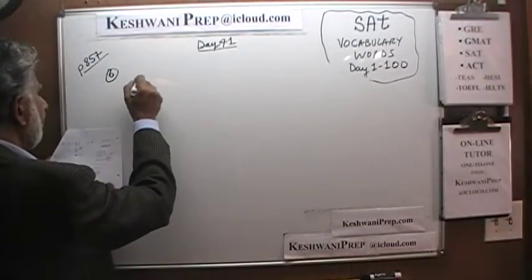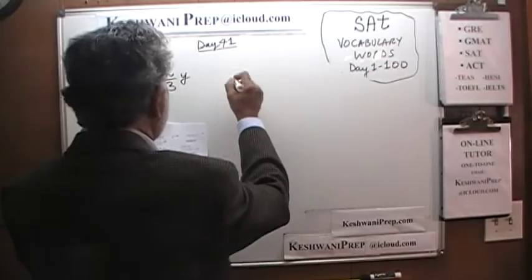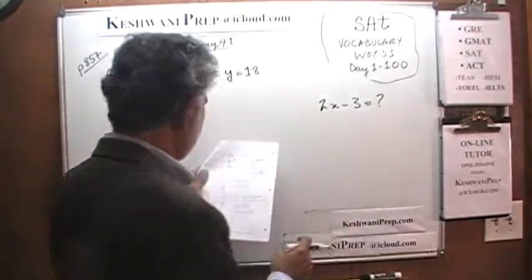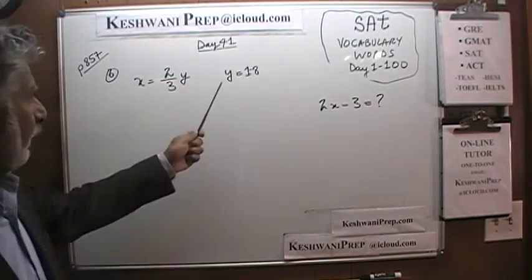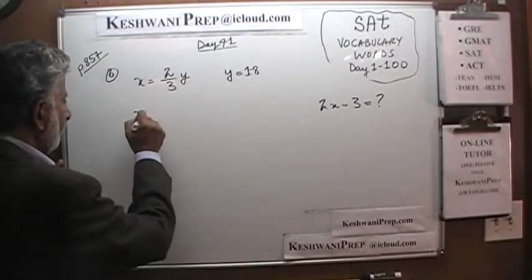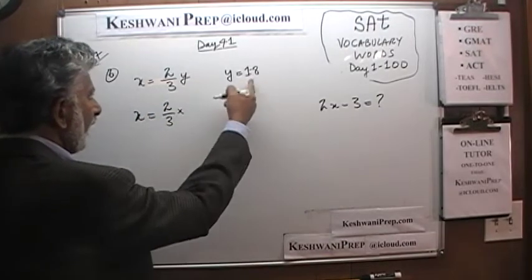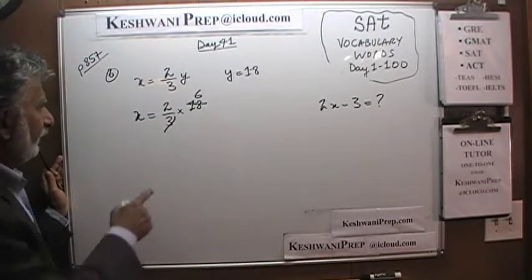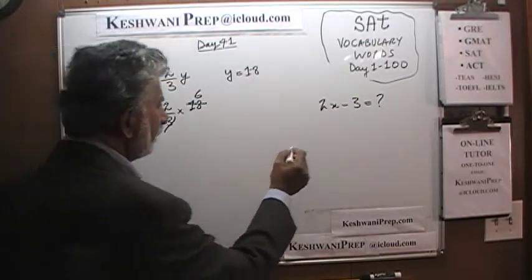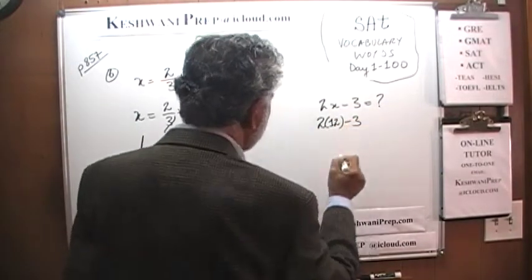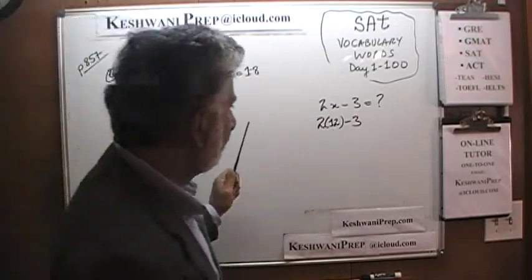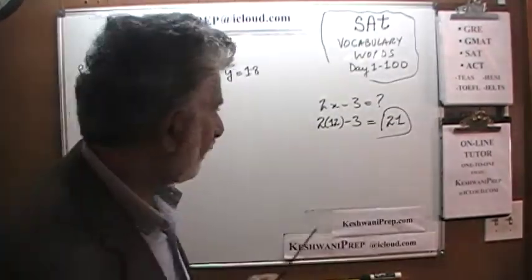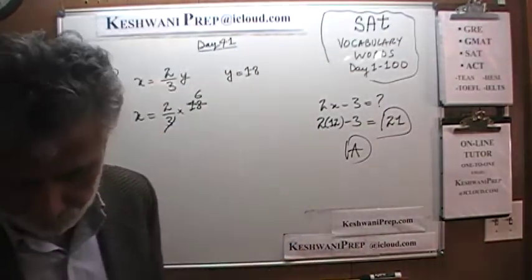Number 6. We are told that x equals 2/3 of y, and y is 18. The question is how much is 2x minus 3? Since y is 18, x equals 2/3 times 18. Dividing: x equals 2 times 6, which is 12. Then 2 times 12 is 24, and 24 minus 3 is 21. The answer is 2x minus 3 equals 21, which is answer choice A.